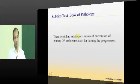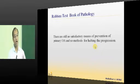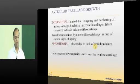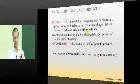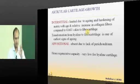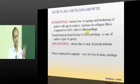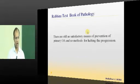This is an important point — Robin's Textbook of Pathology states there are still no satisfactory means of prevention of osteoarthritis and no methods for halting its progression. This is because the changes occurring in the cartilage do not allow chondrocytes to form a new matrix that is soft, resilient, and capable of normal function.